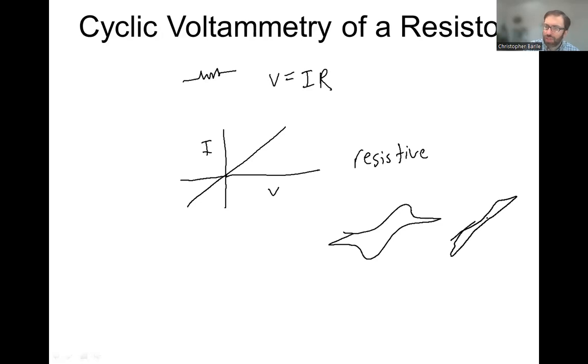Or there's some duck-like features, but there's this resistive line on top of it. So if you have a resistive CV, it tells you that something is wrong, most likely. You don't want this for most experiments.